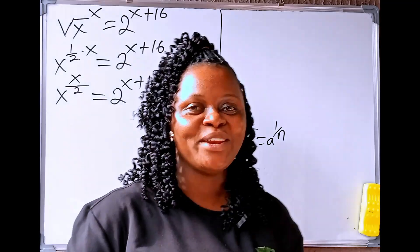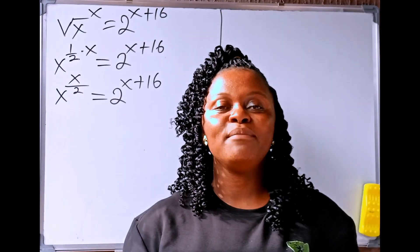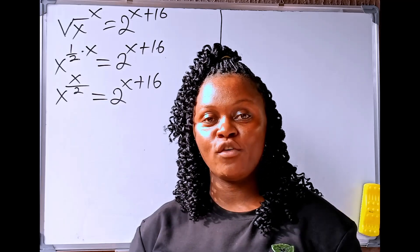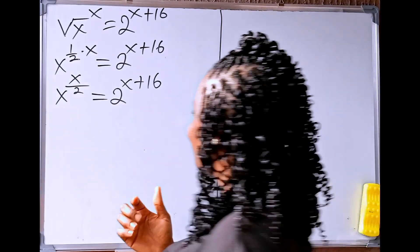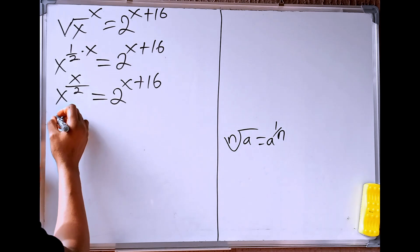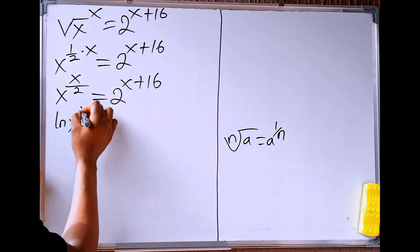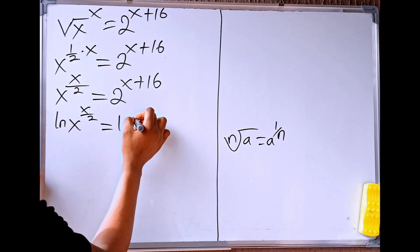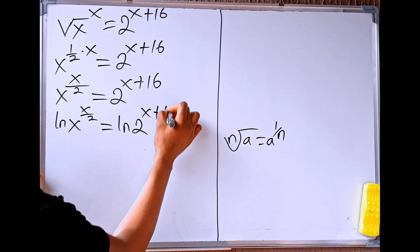Now, the next thing we need to do here is to take a natural log of both sides. I think this is the simplest way to solve this. We are going to have ln of x to the power of x divided by 2 equals ln of 2 to the power of x plus 16.